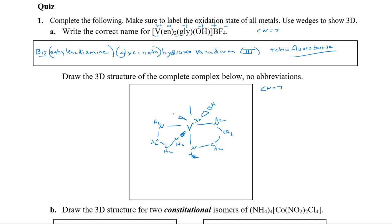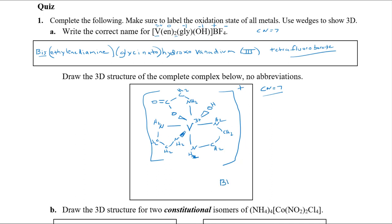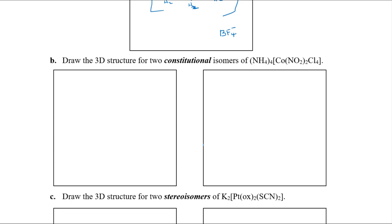For glycinato, if you don't remember the structure it's on the same page as ethylenediamine and oxalato in your notes — go back and review. Glycinato binds through one oxygen and one nitrogen, with a carbon bearing a double-bonded oxygen. Draw that out completely. Overall this complex has a +1 charge, and the counter ion — tetrafluoroborate — simply balances that charge but is in no way bound to the metal; that's why it's called a counter ion.